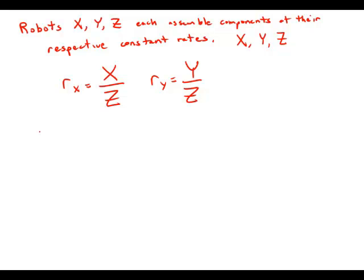Statement number one tells us that RX is less than RY. So what that means is that X over Z is less than Y over Z. And if we multiply both sides by Z, we do get that X is less than Y. So that's interesting.